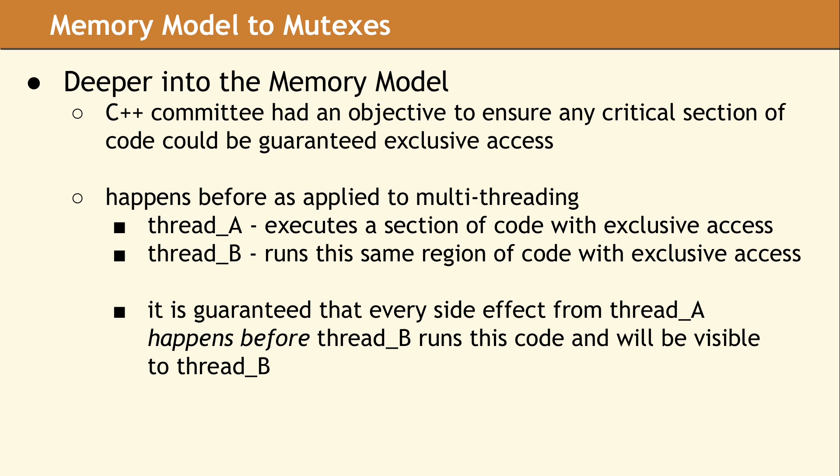The C++ committee recognized there needed to be a way for a programmer to indicate that a section of code run by multiple threads at the same time would cause problems. The threads would interfere with each other and produce meaningless or random results. The purpose of a mutex is to guarantee exclusive access to a designated section of code. Suppose thread A executes a section of code with exclusive access, then thread B runs this same region of code. In order for thread B to observe all the modifications produced by thread A, there had to be rules set up to avoid the possibility of interleaving the execution of this code between threads. This is where the idea of happens-before comes in.